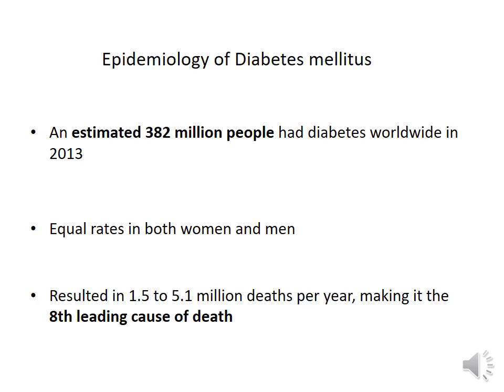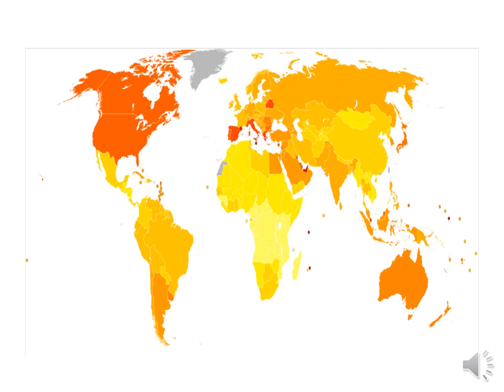Epidemiology of diabetes mellitus: in 2013, an estimated 38.2 crore people globally had diabetes. Both men and women had equal rates. The mortality in 2012 and 2013 was 1.5 to 5.1 million people, making it the eighth leading cause of death. On the map, the darker the color, the more the incidence of diabetes, so economically better-off countries have a higher incidence.